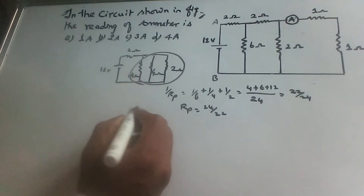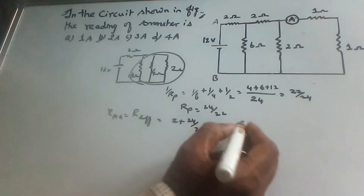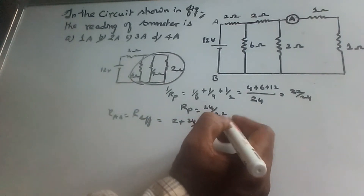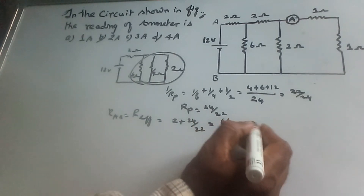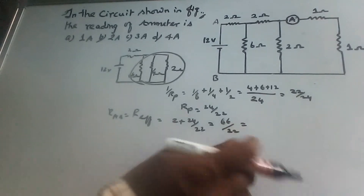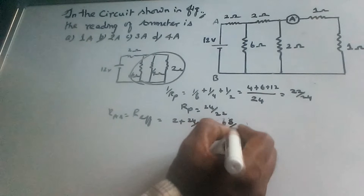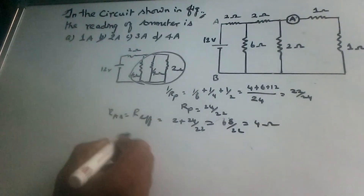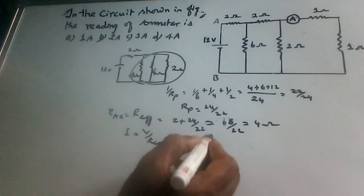So Rp equals 24 by 22 ohm. In series with the 2 ohm, RAB equals 2 plus 24 by 22, which gives 44 plus 24 over 22 equal to 68 by 22, approximately 4 ohm. The effective resistance across A and B is 4 ohm. Hence the current I equals V by R effective equals 12 by 4, so I equals 3 ampere.